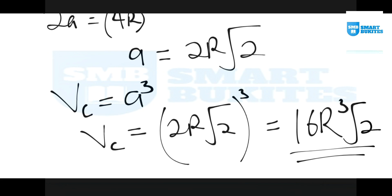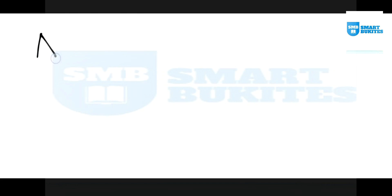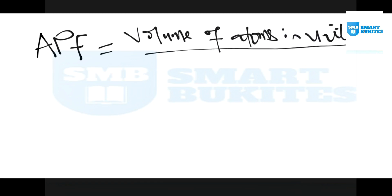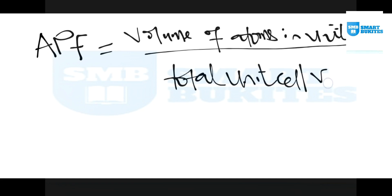For the second part of the question, we are told to find the atomic packing factor of the FCC. For every crystalline structure, the atomic packing factor APF shows how packed the atoms are together in that unit cell. The formula is: APF = volume of atoms in the unit cell divided by the total unit cell volume, which is the volume of the cube we just found.